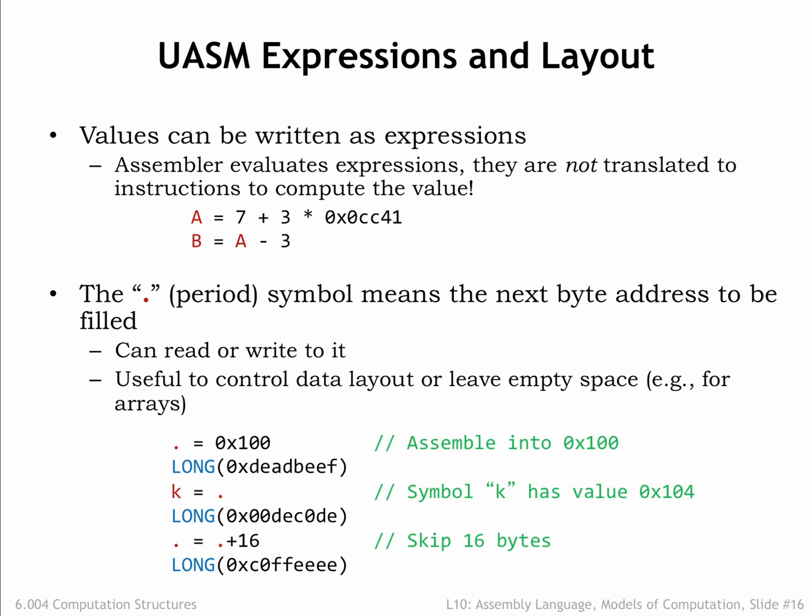We can use dot in expressions to compute the values for other symbols, as shown here when defining the value for the symbol K. In fact, the label definition K colon is exactly equivalent to the UASM statement K equals dot. We can even increment the value of dot to skip over locations — for example, if we wanted to leave space for an uninitialized array.